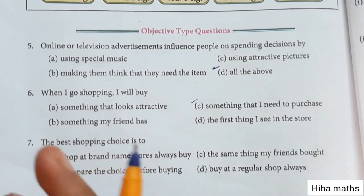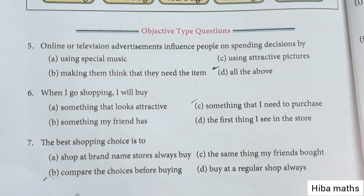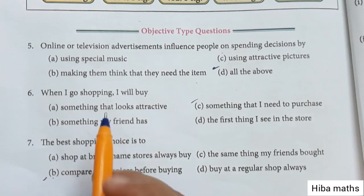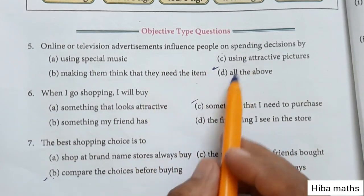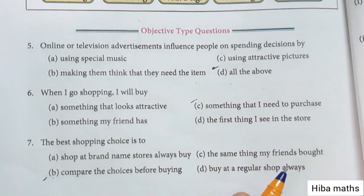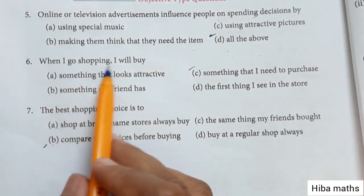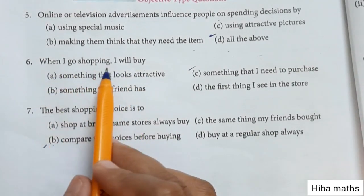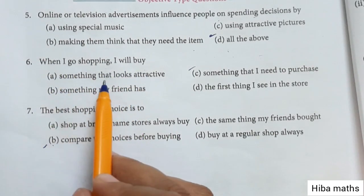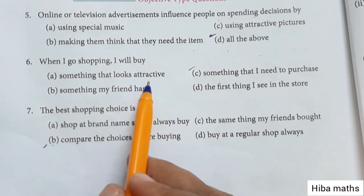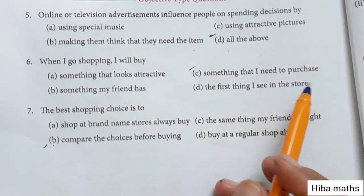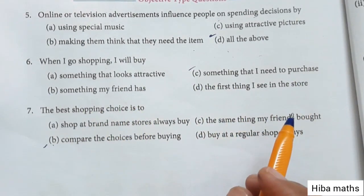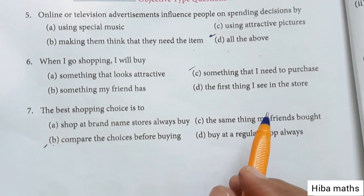If you want to buy chocolates, you can buy something attractive — something that you need to purchase. You can buy anything attractive.